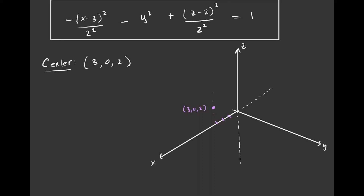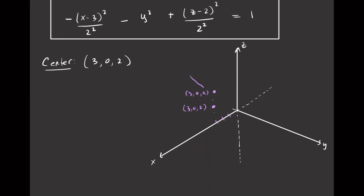Going 2 units up from center Z = 2 gives vertex (3, 0, 4), and we draw the first sheet there. Going 2 units down gives vertex (3, 0, 0), and we draw the second sheet. Then we add elliptical traces in the XY-parallel planes at each sheet to complete the picture.